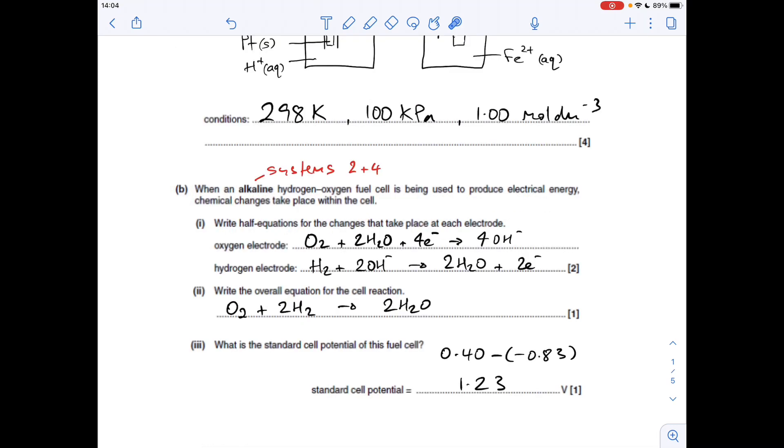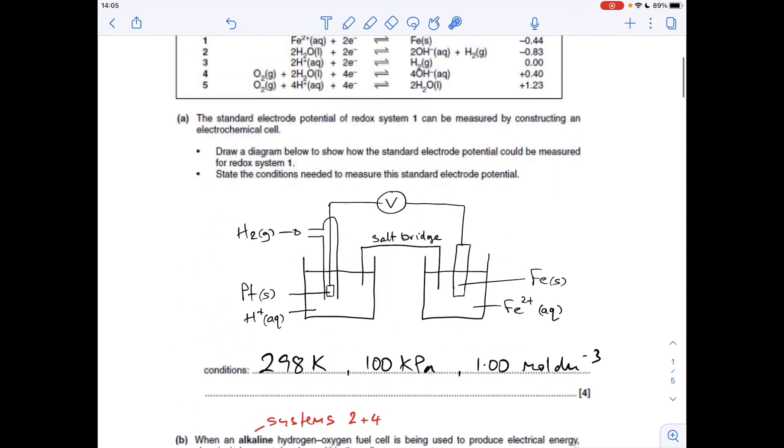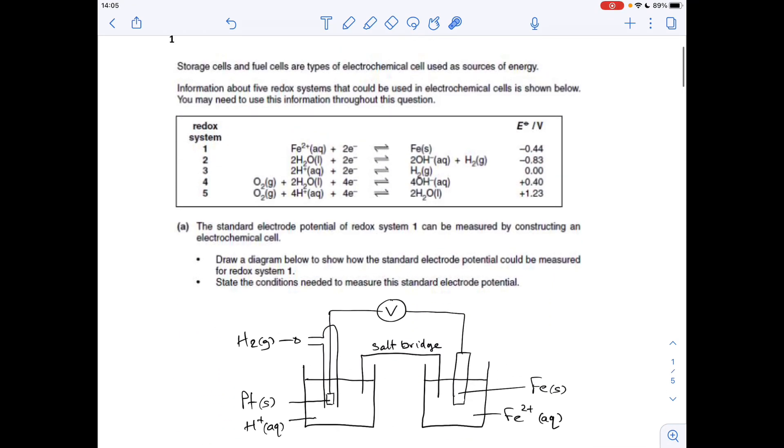Moving on to part B, which is about the alkaline hydrogen oxygen fuel cell. We've got to write the half equations for the changes taking place at each electrode. You'll notice I've written there systems two and four. So system two is the hydrogen electrode with the hydroxide ions, alkaline conditions. System four, oxygen electrode, but this one's got the OH- ions.